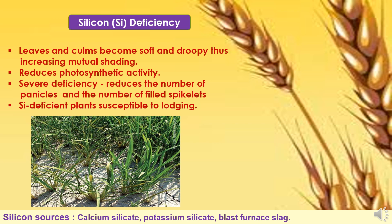Silicon is also playing an important role as a micronutrient. The leaves and culms become soft and droopy due to increased mutual shading in case of deficiency, and it reduces photosynthetic activities. Severe silicon deficiency reduces the number of panicles and the number of filled spikelets, making it critical to yields and proper grain filling. Silicon-deficient plants will be susceptible to lodging. Silicon sources available include calcium silicate, potassium silicate, and blast furnace slag, which can be applied to overcome deficiency symptoms.